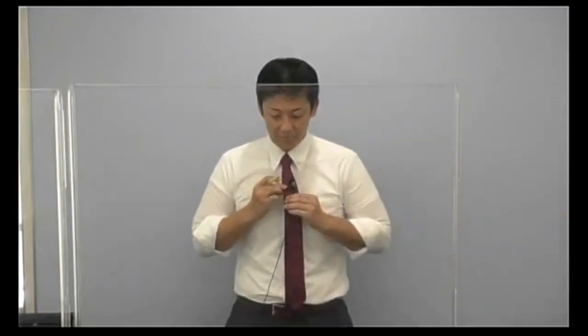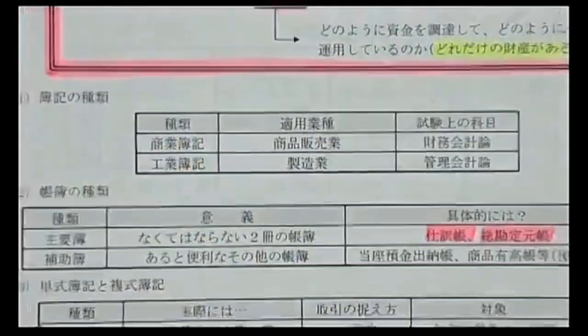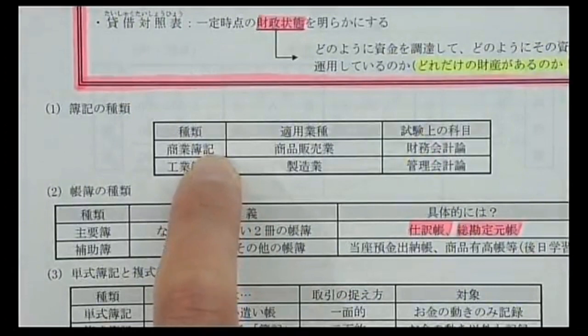商業簿記は出来上がったものを買ってきて売ります。工業簿記は自前の工場で材料からものを作って売るという製造活動が加わります。財務会計という科目は商業簿記をメインで扱います。工業簿記は10月下旬からスタートする管理会計の科目で勉強します。